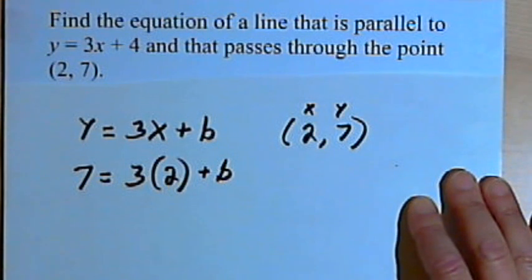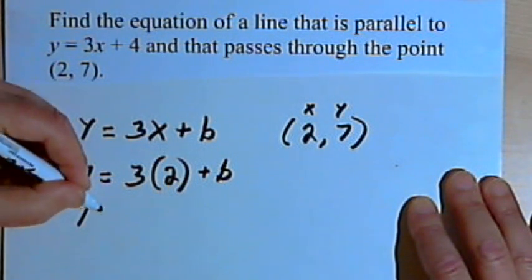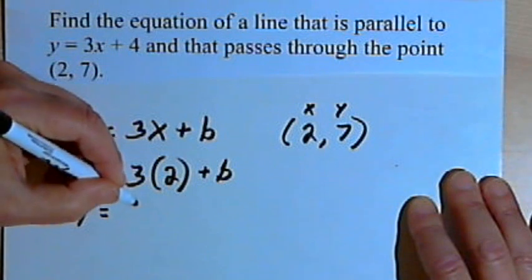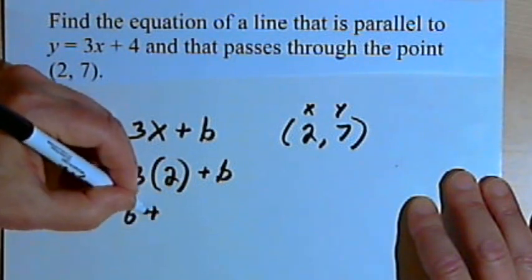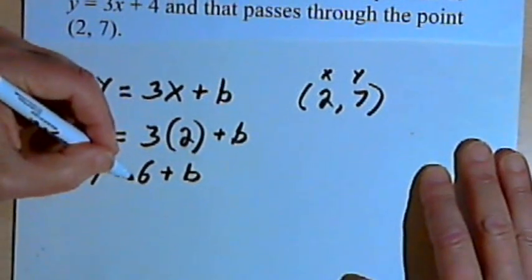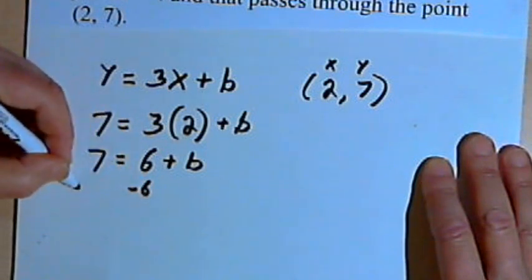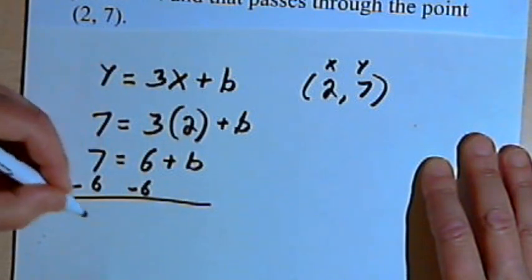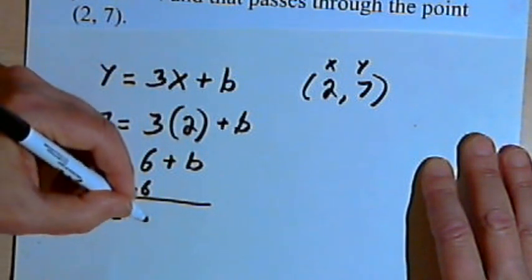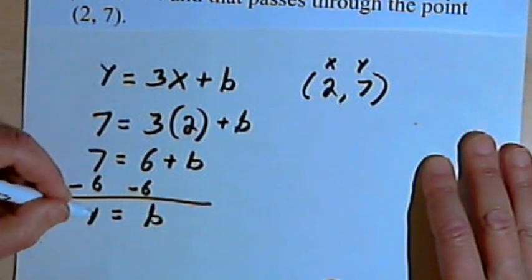So now I can solve for b. I'll multiply 3 times 2. So 7 equals 6 plus b. I'll subtract 6 from both sides. I'm going to end up with b equal to 1.